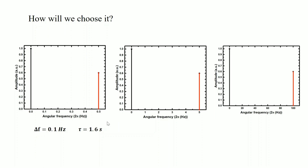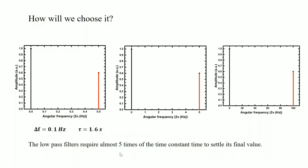Another important point is that the low-pass filter requires almost 5 times the time constant to settle to its final value. Otherwise, the value will fluctuate and you will not get a reliable reading. So we have to wait at least 5 tau before collecting a stable value. In this case, the data accumulation time will be 1.6 seconds multiplied by 5, meaning at least 8 seconds. We have to wait 8 seconds in order to collect one data point and then proceed. Choosing this bandwidth would make the experiment take a very long time.